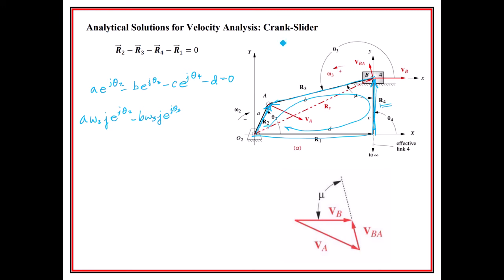But in the crank slider, this R right here is moving back and forth, so we go minus d dot. It does change, and so that's equal to zero. That's the thing.